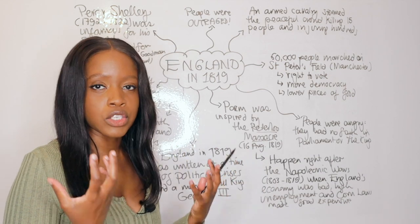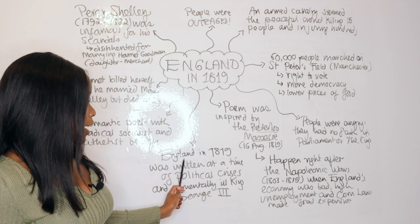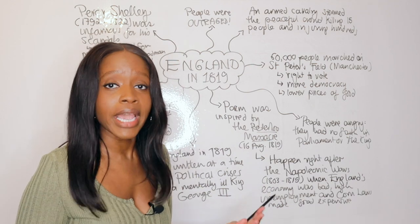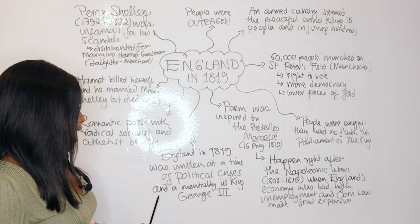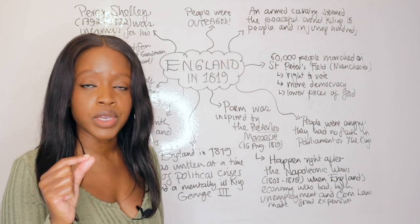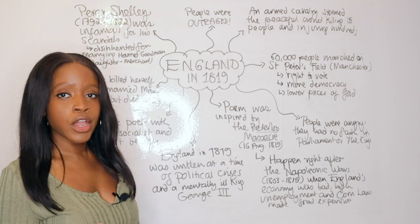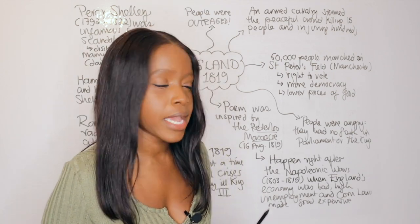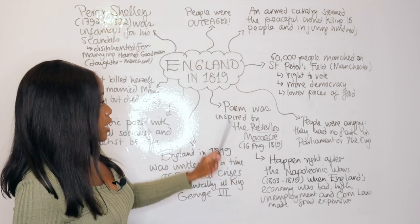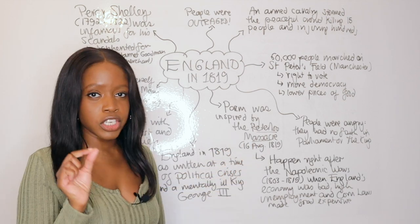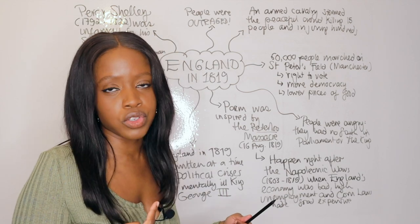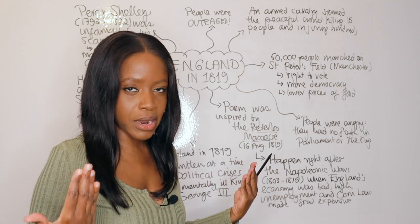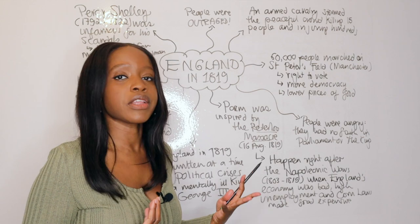When it comes to the poem itself, it's really important to bear in mind that England in 1819 was written at a time of political crises in England. There was a lot of political chaos during the time Percy Shelley wrote this. The poem was written during the reign of King George III, who was mentally unwell and made a series of bad political decisions. The poem was inspired by the Peterloo Massacre — you need to be familiar with this event, which inspired huge outrage, especially within Percy Shelley, driving him to write this poem.